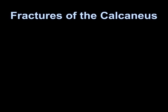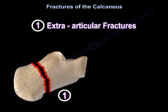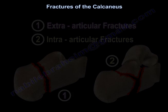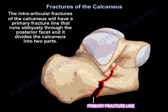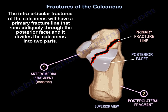Fractures of the calcaneus can be extraarticular or intraarticular. The intraarticular fractures of the calcaneus will have a primary fracture line that runs obliquely through the posterior facet, and it divides the calcaneus into two parts: the intermedial sustentaculum fragment and the posterolateral tuberosity fragment.